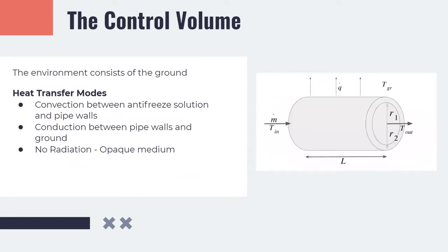We consider a control volume that of a section of length L having inner and outer radii R1 and R2 of a pipe. The coolant enters the control volume at a temperature T inlet and leaves at a temperature T outlet with the mass flow rate being M dot. The surrounding ground temperature is taken to be constant TGR. The environment of the system consists of the ground. Heat is transferred between the antifreeze and the pipe walls and between the pipe walls and the soil. The heat transfer processes occurring here are conduction through the pipe wall and convection between the antifreeze and the pipe walls. Radiation doesn't exist as the pipe is surrounded by an opaque medium.